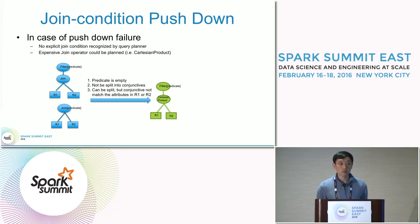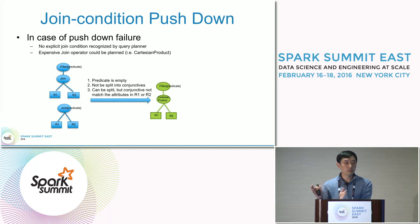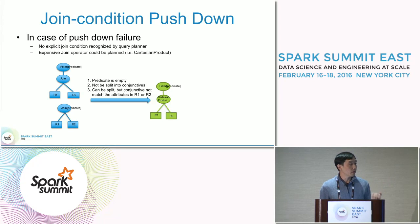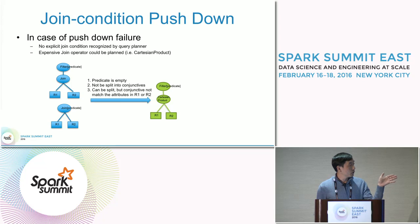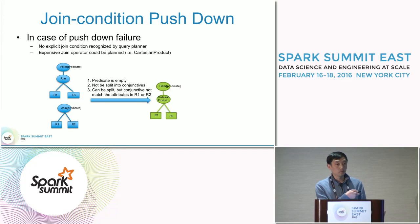The three cases are: first, the predicates input is empty — we don't have any condition at all. Second, the predicates cannot be split into small pieces of conjunctives. Third, even though we can split the entire predicates into conjunctives, the attributes from a conjunction cannot match the relations from both sides of the join. On the left side, we have two kinds of logical join plans — R1 and R2 represent join relations, which might be a single table or a subquery of a nested join. If any one of these three conditions is met, we trigger the pushdown failure, and as a result, we see a Cartesian product or nested loop join in the physical plan.